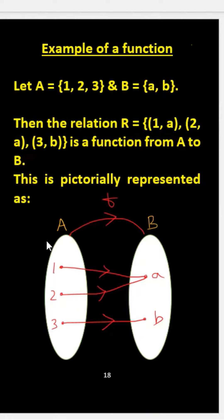This is pictorially represented as: A is represented in the form of a circle and B again in the form of a circle.